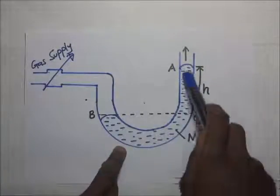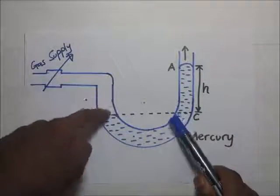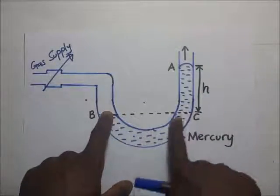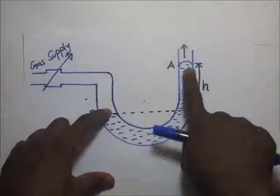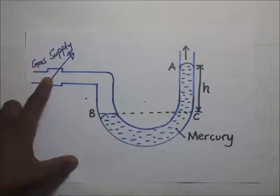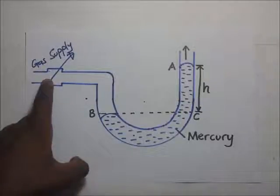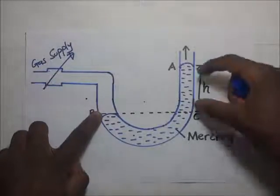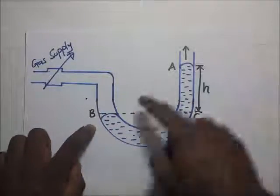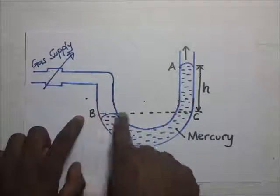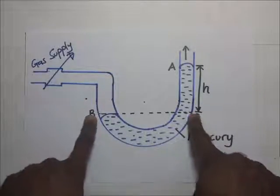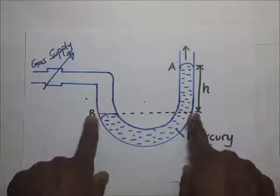As a result, this limb will move down a certain height, and it will be the same height by which the other limb rises up. To calculate the pressure of the gas supply, we look at reference points — level B and level C — and the pressure at level B equals the pressure at level C.